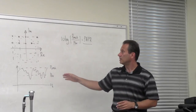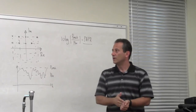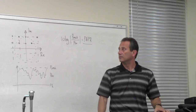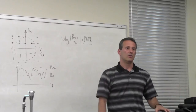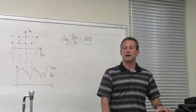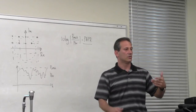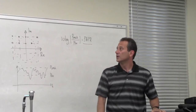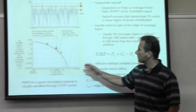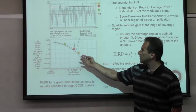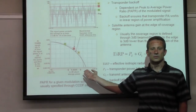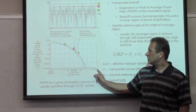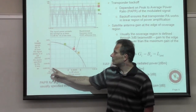This becomes particularly important for recent waveforms like CDMA and OFDM used on satellites, both of which have relatively high PAPR because they have noise-like, near-Gaussian characteristics. The PAPR characteristic of a waveform is specified through CCDF — Complementary Cumulative Distribution Function — curves. The x-axis shows a threshold above average power; the y-axis shows the probability of exceeding that threshold. For example, if 10% of the signal is 3 dB above average, that point appears on the CCDF.